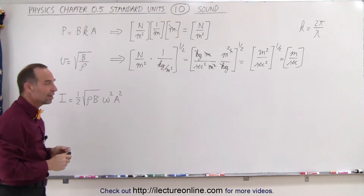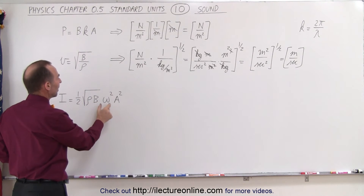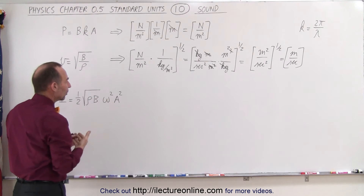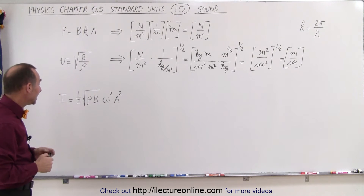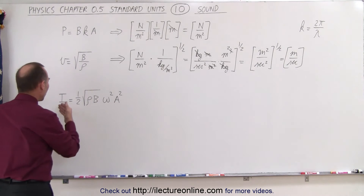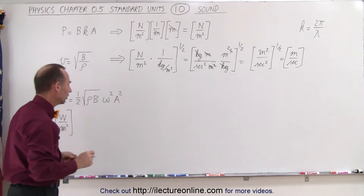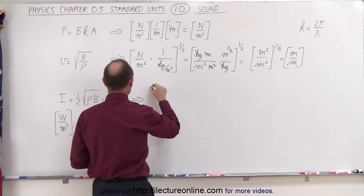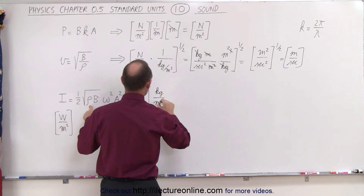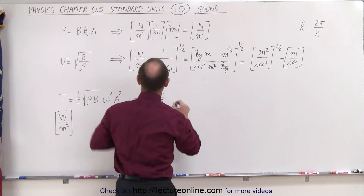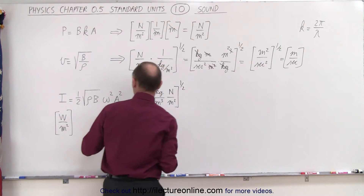Finally, the intensity of sound. The intensity equals one-half times the square root of the density times the bulk modulus, times the angular frequency squared, times the amplitude squared. We expect watts per square meter. Under the radical we have density in kilograms per cubic meter, and bulk modulus in newtons per square meter — that whole portion is raised to the one-half power.